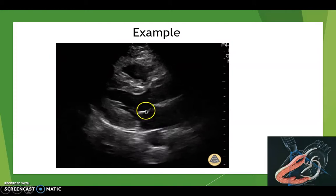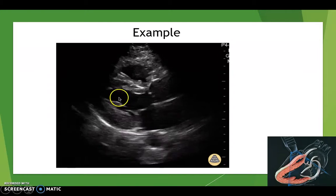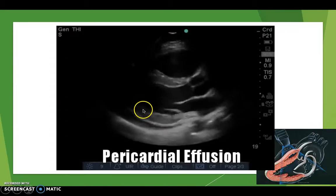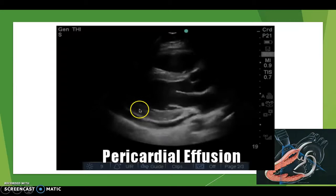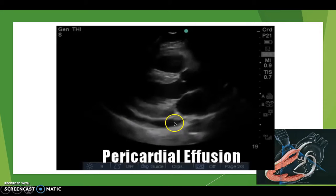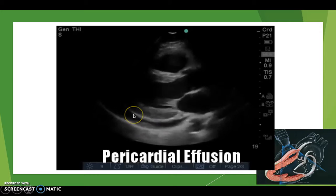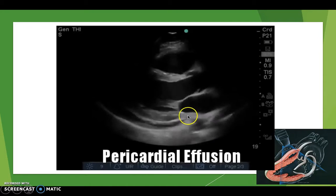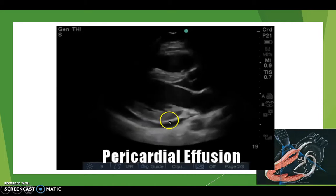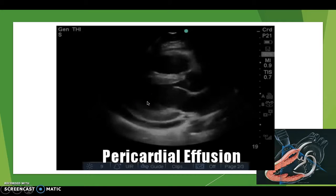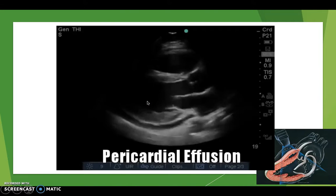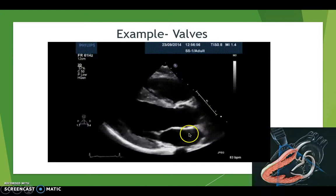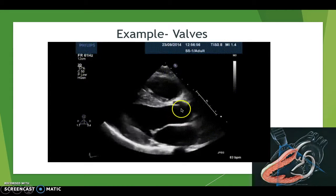Here is another example of the heart. Left atrium, mitral valves, left ventricle, aortic valve — but take a look under the heart: you'll see some black. That's fluid. There should be no fluid under the heart, but here we see fluid — this is a pericardial effusion. This is something you can identify immediately with ultrasound; you don't need to wait for an X-ray or CT scan.